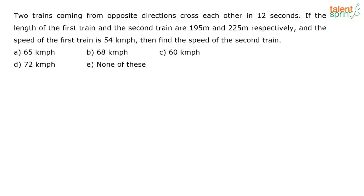Two trains coming from opposite directions cross each other in 12 seconds. If the length of the first train and the second train are 195 meters and 225 meters respectively, and the speed of the first train is 54 kilometers per hour, then find the speed of the second train.